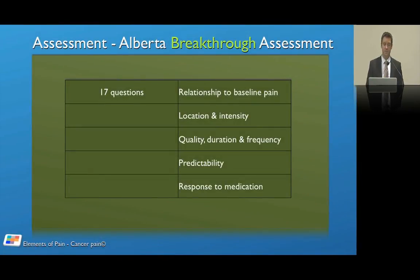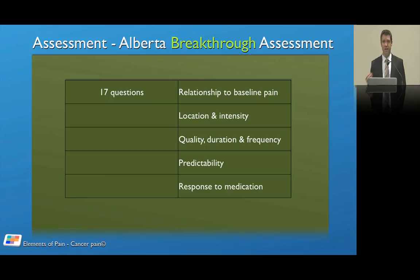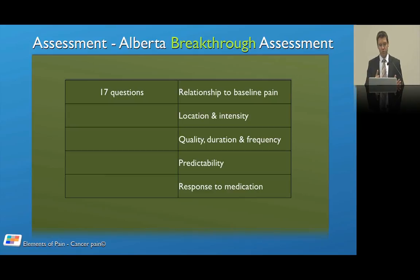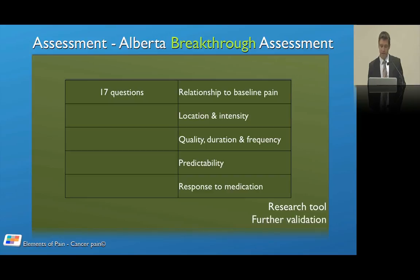The Alberta Breakthrough Pain Assessment Tool is still not fully developed and has undergone a number of changes. They used a Delphi process and think-aloud sessions by experts to come up with 17 questions to assess breakthrough pain. These assess the relationship of breakthrough pain to baseline pain, location, intensity, quality, duration, frequency, predictability, and response to medication. We're seeing similar domains across all assessment tools. The Alberta scale is still a research tool, is quite complicated, and needs further validation, but might be something we use in the future.